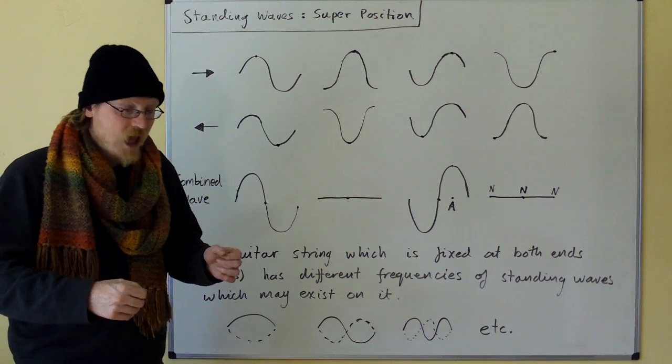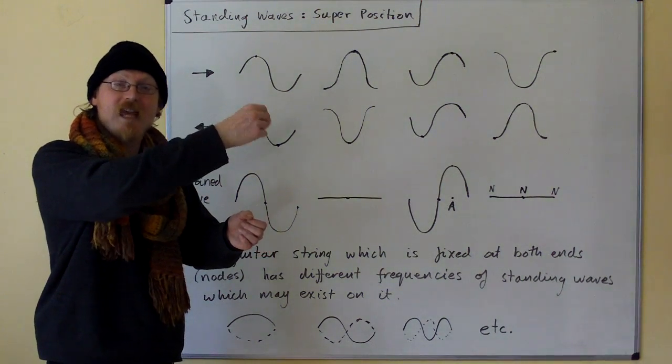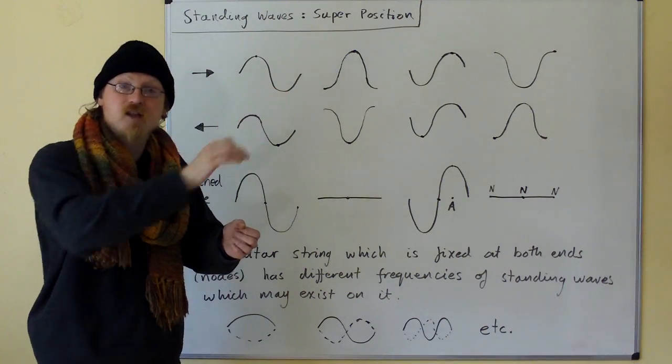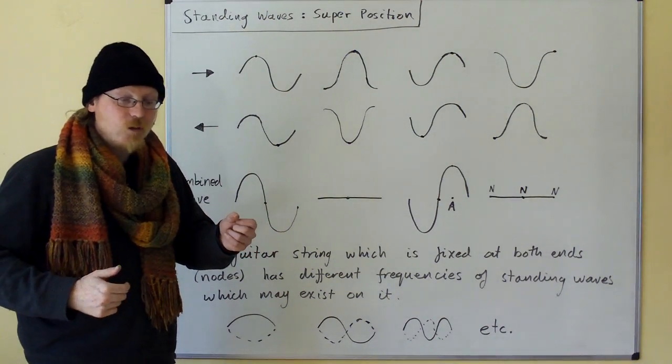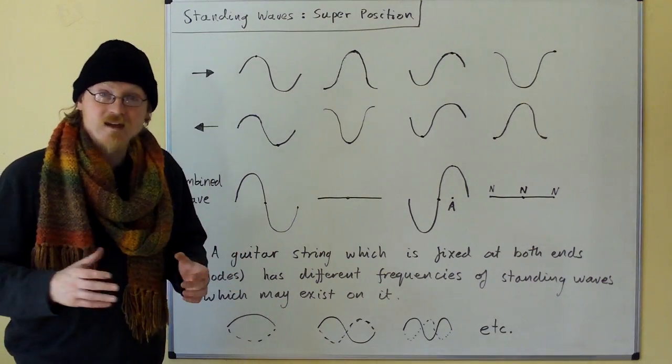If you look at a guitar string, you have a wave traveling down the string. It gets reflected at the end where the string is at the nut or at the bridge, and so you get the wave reflected on top of itself and you can set up a standing wave.